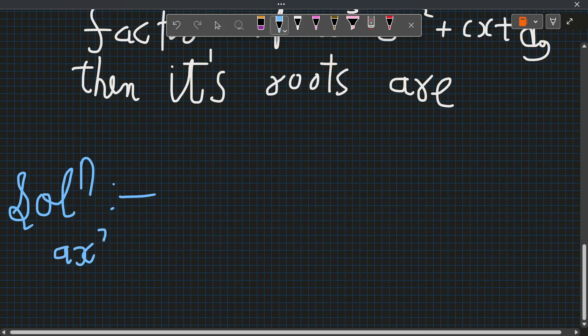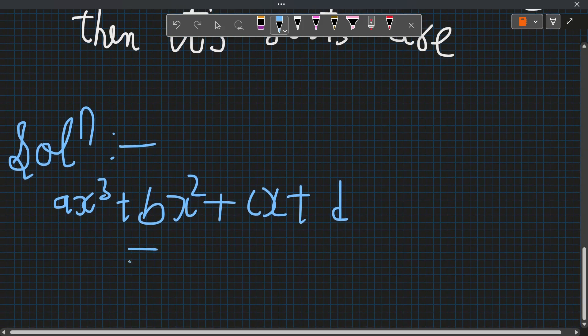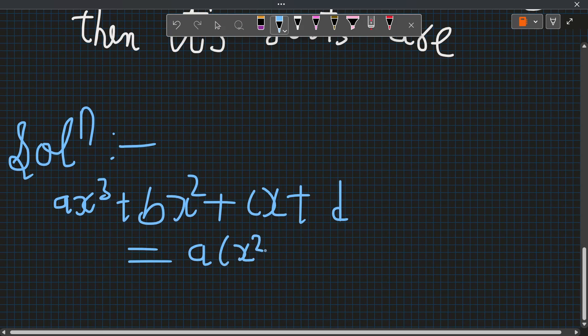So by factor theorem I can definitely write ax³ + bx² + cx + d equal to a times x² + x + 1. Now already we have written a quadratic factor and this is a cubic polynomial.